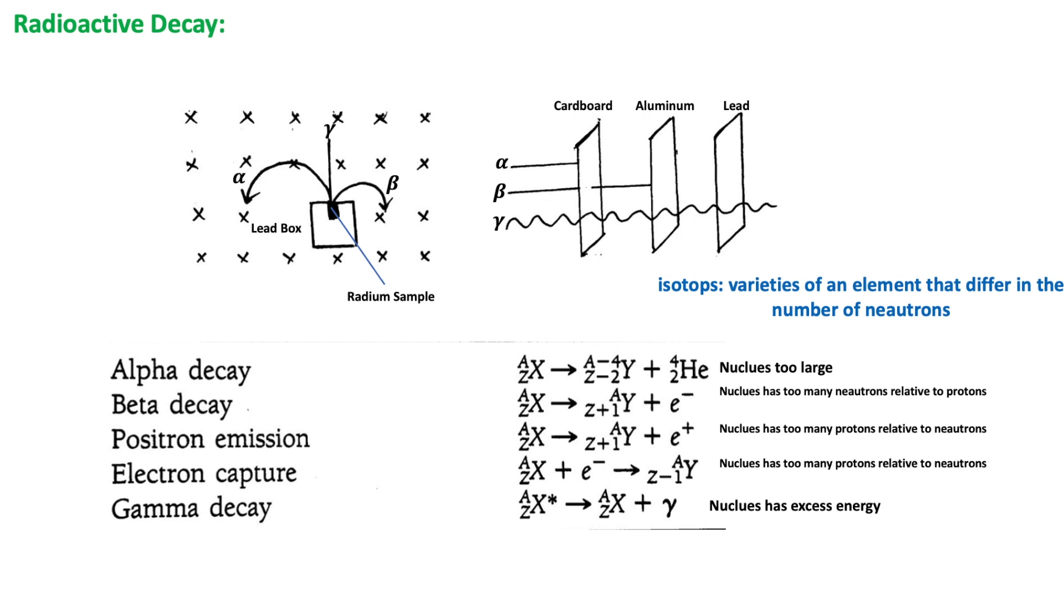The radioactivity of an element arises from the radioactivity of one or more of its isotopes. Isotopes are varieties of an element that differ in the number of neutrons. These varieties have the same number of protons as the element, but different numbers of neutrons.